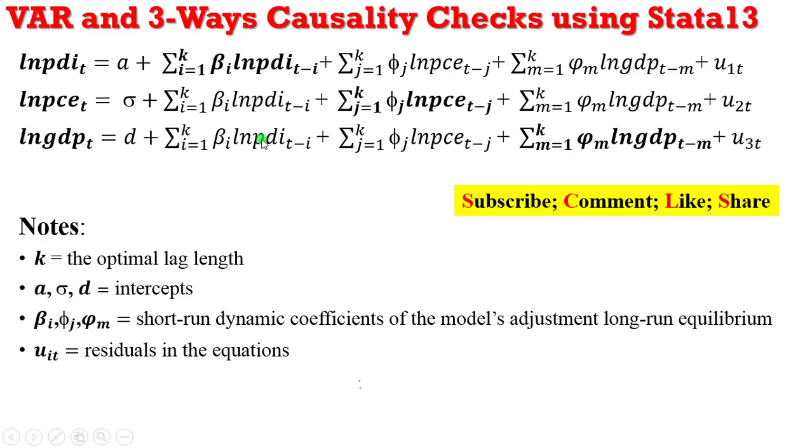So trying to explain the unidirectional causality in a more vivid form using the PDI equation alone. Let me assume that the PDI equation in this case is Q and PCE is J. A unidirectional causality will occur if all the lagged values of PCE are significant in the PDI equation. Now, in the PCE equation, if all the lagged values of the PDI regressors are not significant, then we can conclude that there is a unidirectional causality from PCE to PDI.